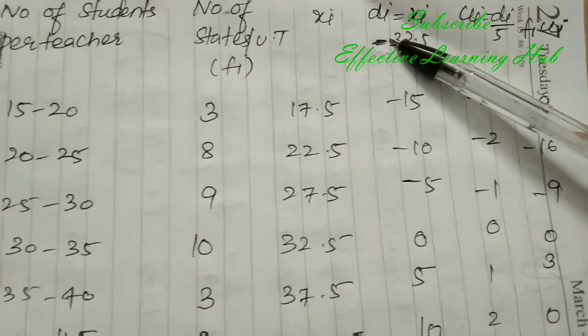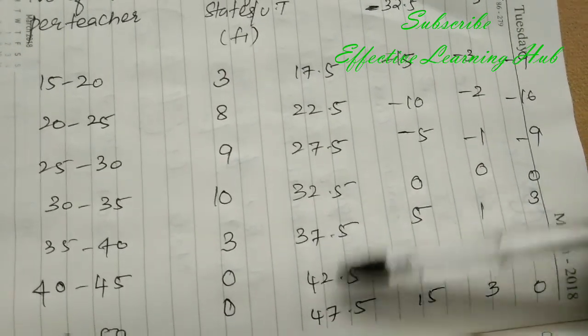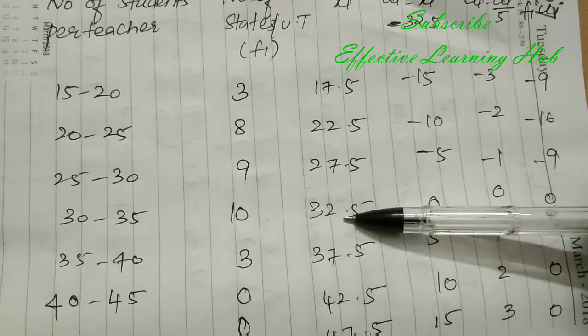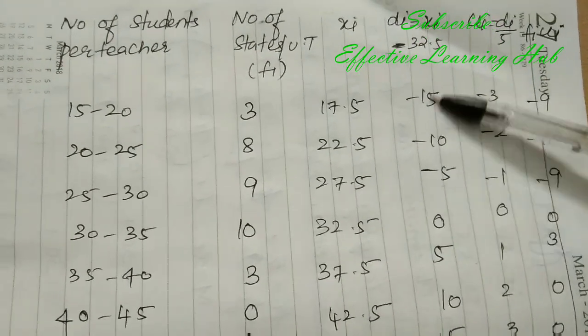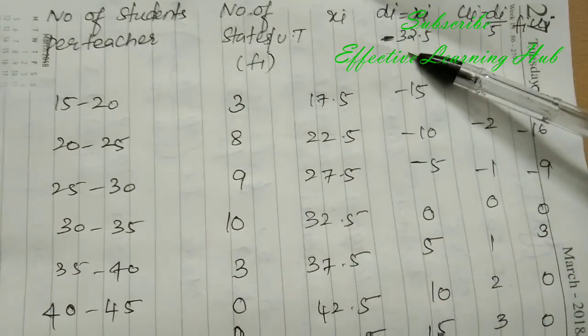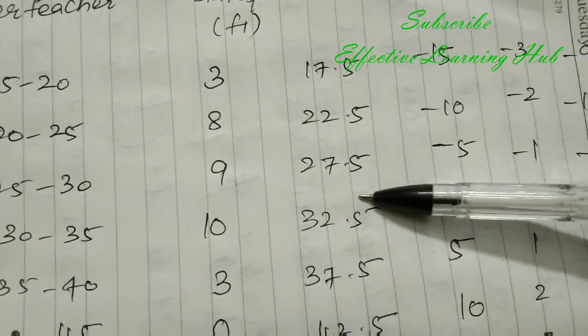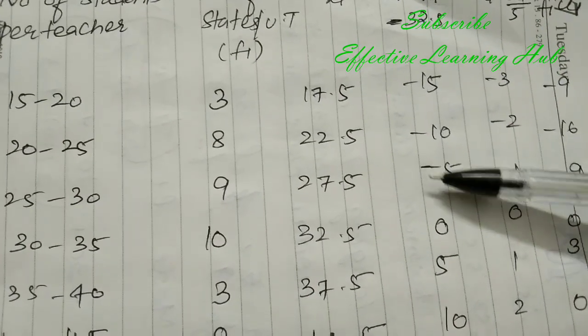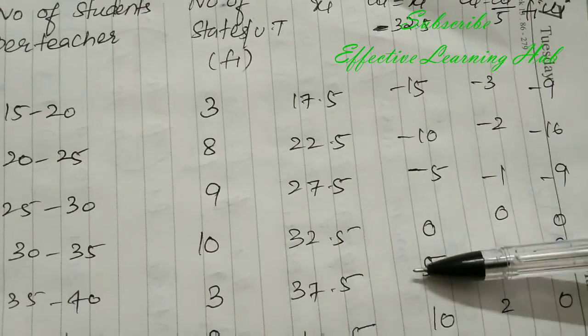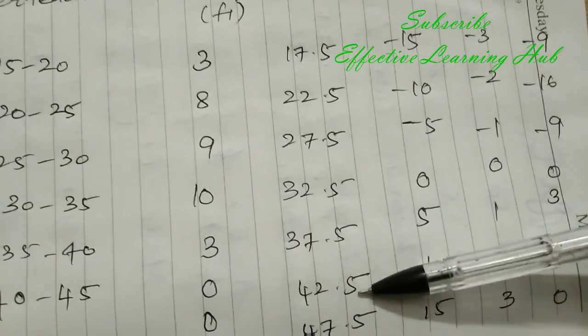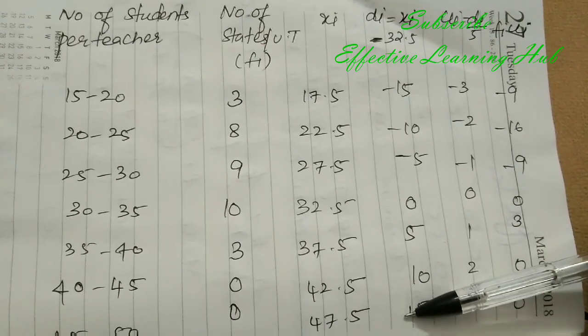Next, di equal to xi minus a. 1, 2, 3, 4, 5, 6, 7, so center value 32.5, center of xi equal to middle of xi equal to a, so a equal to 32.5. Now subtract: 17.5 minus 32.5 equal to minus 15; 22.5 minus 32.5 equal to minus 10; 27.5 minus 32.5 equal to minus 5; 32.5 minus 32.5 equal to 0; 37.5 minus 32.5 equal to 5; 42.5 minus 32.5 equal to 10; 47.5 minus 32.5 equal to 15.